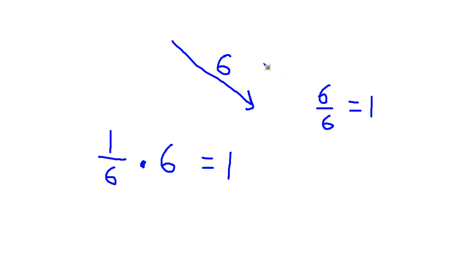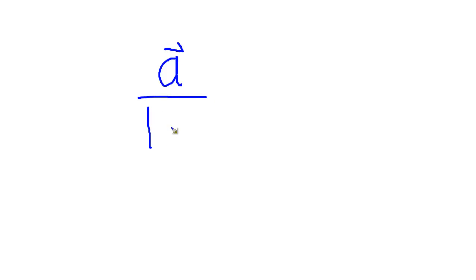So to normalize the vector, all we have to do is divide it by its length. So if I have the vector A, this is a vector, all I need to do is divide it by its magnitude.